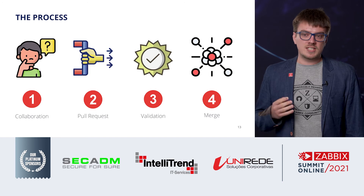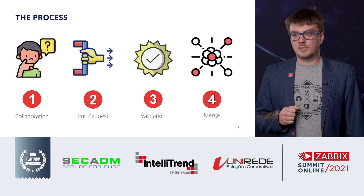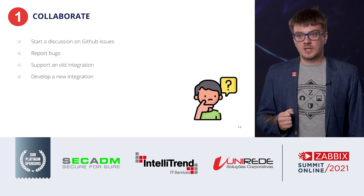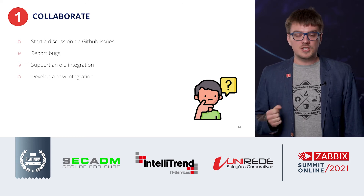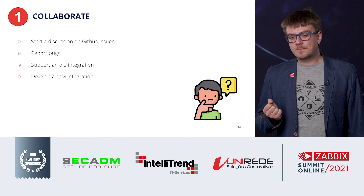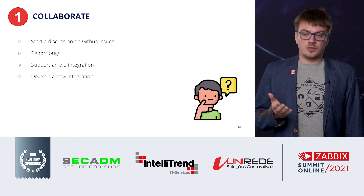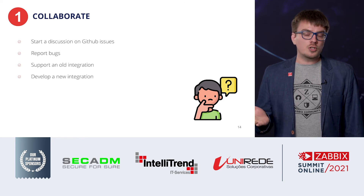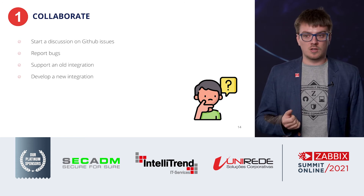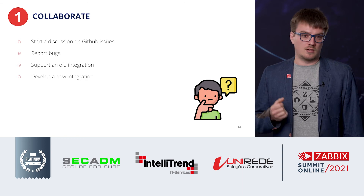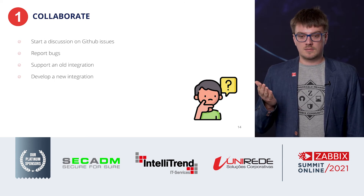Let's go through the process — it's as easy as one, two, three, four steps. How can you collaborate? You can start a discussion on GitHub issues to discuss if the template is working correctly, suggest improvements, report a bug, overtake template maintenance and support an older integration, or develop a new integration, publish it, and gain recognition from the community.